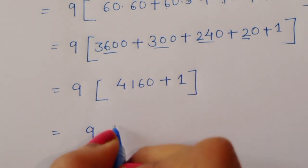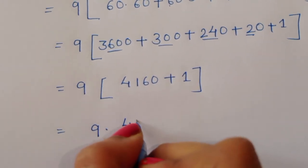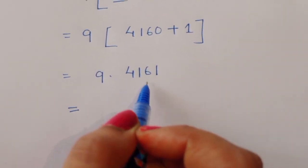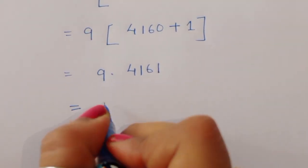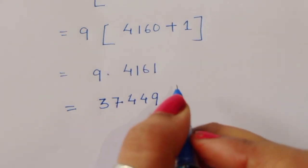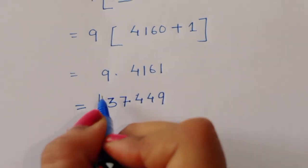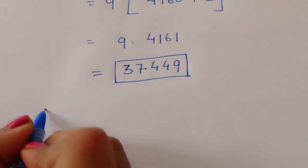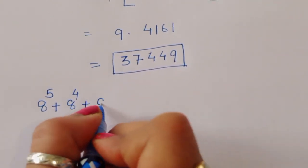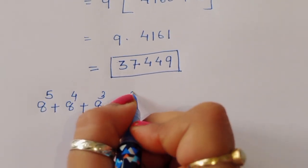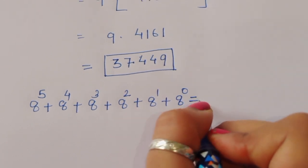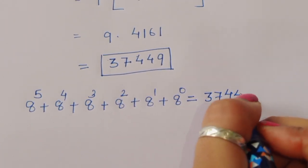So we get 9 times 4161. Multiplying this gives us 37449. So the value of 8 power 5 plus 8 power 4 plus 8 power 3 plus 8 power 2 plus 8 power 1 plus 8 power 0 is equal to 37449.